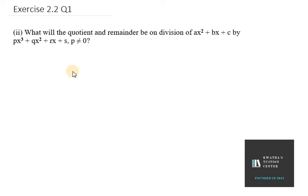Hello everyone, let's start with question number 1, second part of it. In this we need to find what will be the quotient and remainder on division of Ax² + Bx + C by Px³ + Qx² + Rx + S where P is not equal to 0.